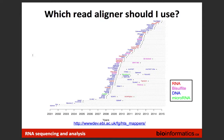HiSat manages to cut down on processing time while keeping memory low. To align 100 million reads: TopHat 2 takes about a day, while STAR and HiSat take 23 minutes. In terms of memory, STAR requires about 28 GB of RAM versus TopHat and HiSat, which only require about 4 GB of RAM — a huge difference.